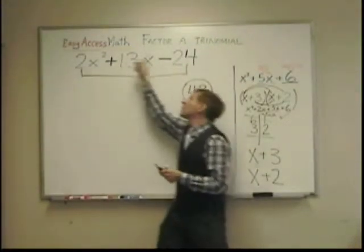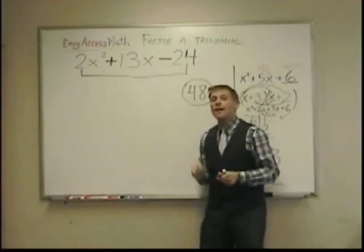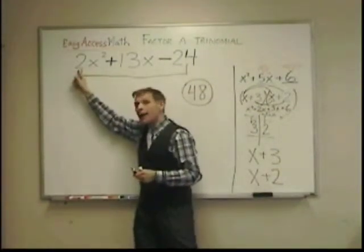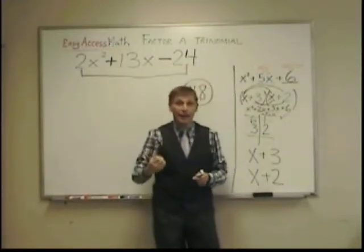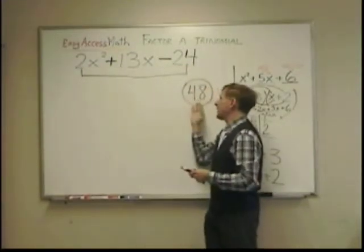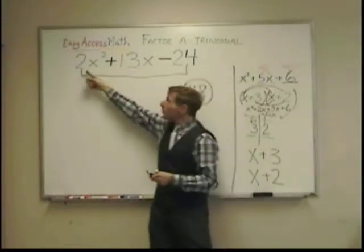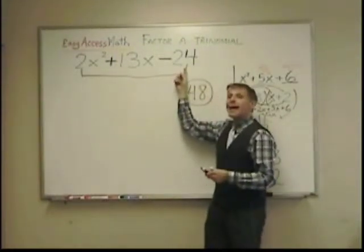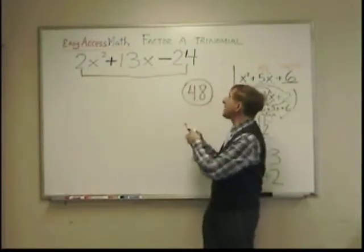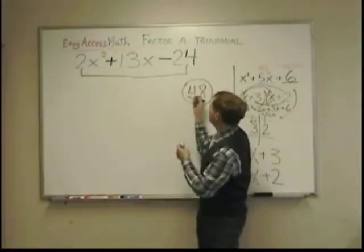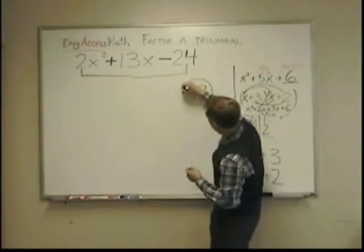But we're going to go for 48 instead of the 24 that's at the end because of the two here. Now, if that was a three, we would multiply the last number by three. And if that was a five, we would multiply that last number by five to get a target number. So here, it's a two. We multiply the last number by two, the 24, I get 48. And let me be sure to put the sign in. It's a negative 48.